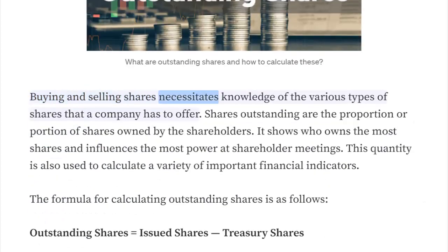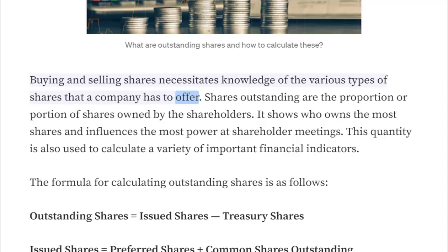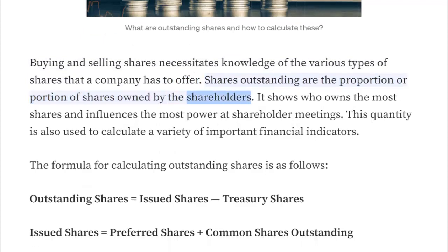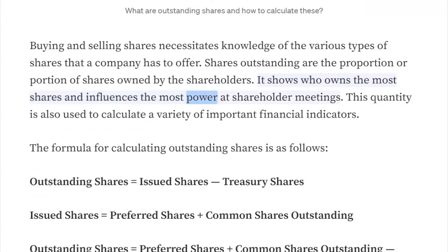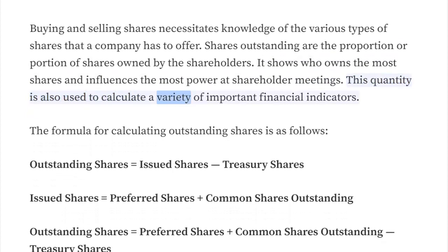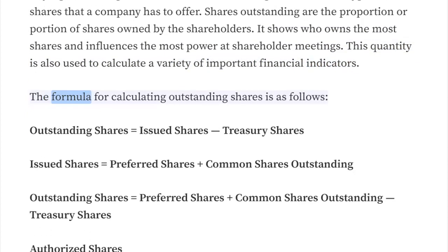Buying and selling shares necessitates knowledge of the various types of shares that a company has to offer. Shares outstanding are the proportion or portion of shares owned by the shareholders. It shows who owns the most shares and influences the most power at shareholder meetings. This quantity is also used to calculate a variety of important financial indicators.